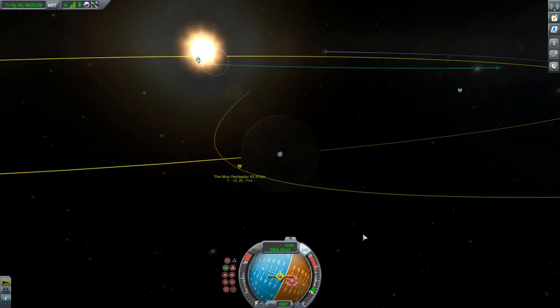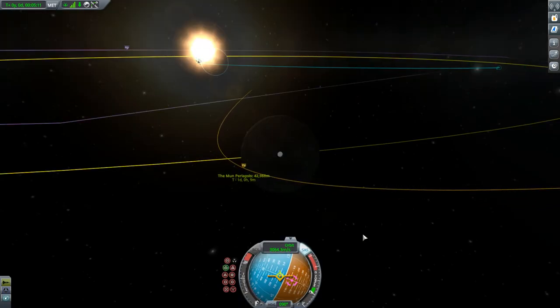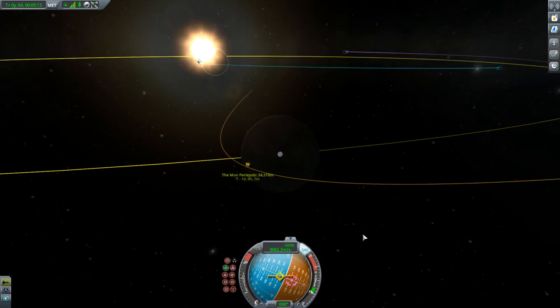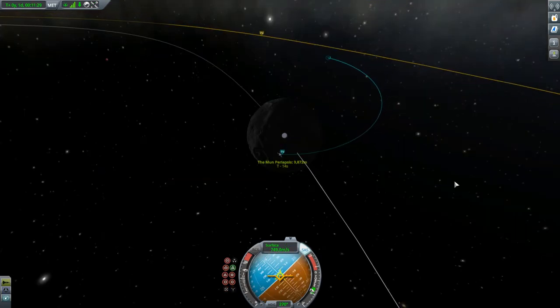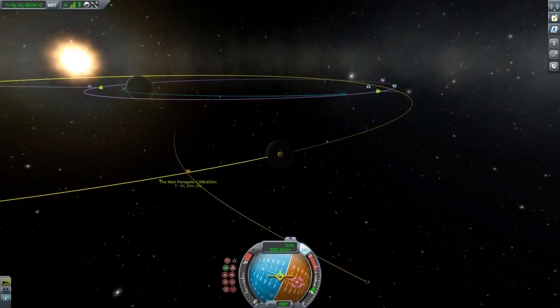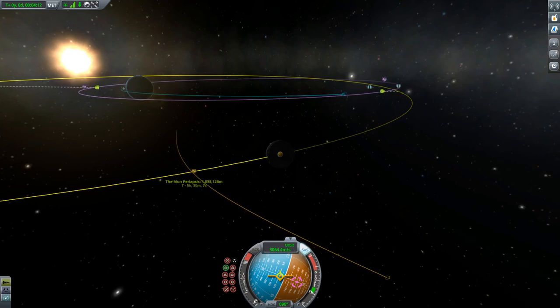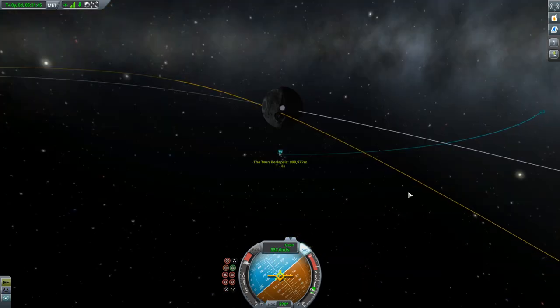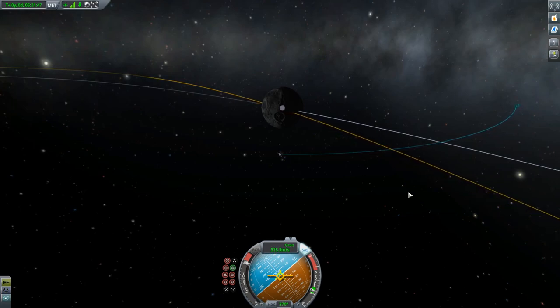Should I take advantage of the Oberth effect by making my approach to the Mun as close as possible, say 10 kilometers, get the capture there, bringing my apoapsis down to 1,000 kilometers, and then circularize at apoapsis? Or should I make my closest approach to the desired altitude of the orbit, 1,000 kilometers, then simply capture and circularize in a single burn at my closest approach? Which way is the most efficient?